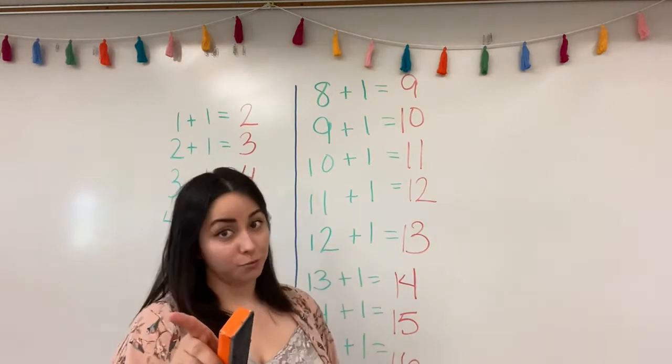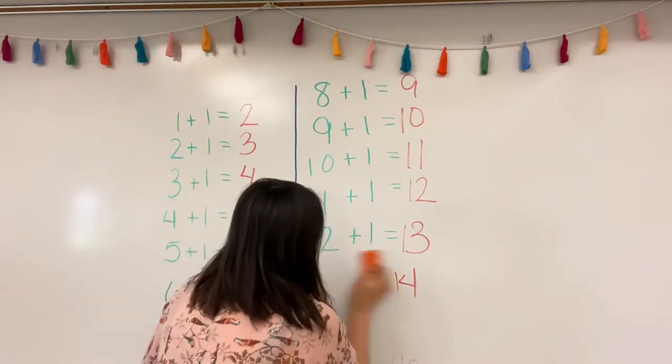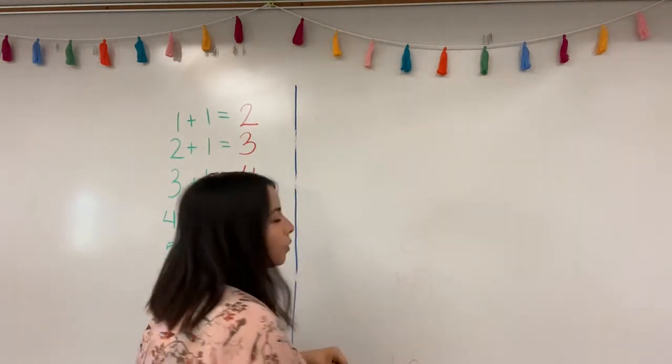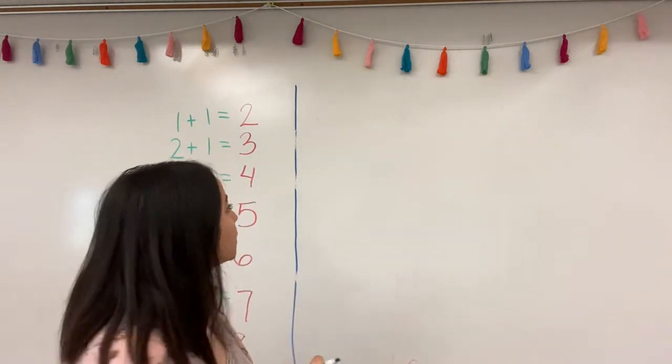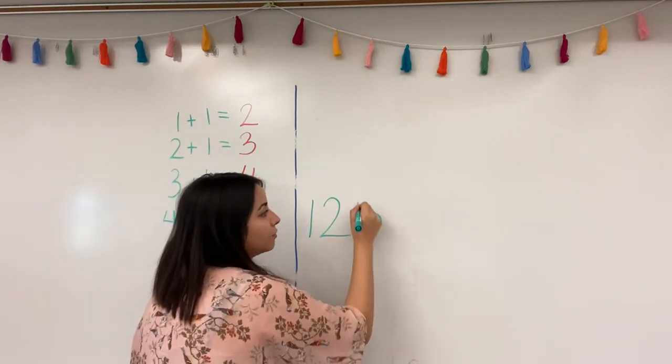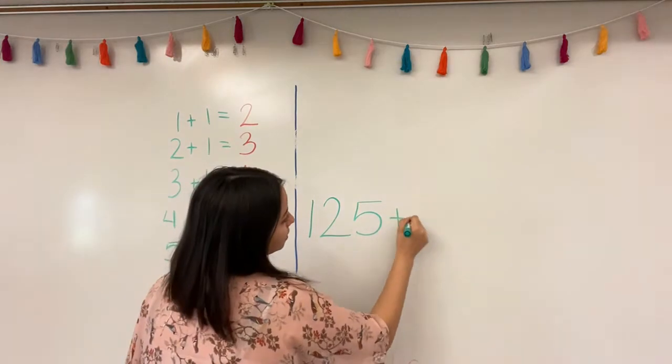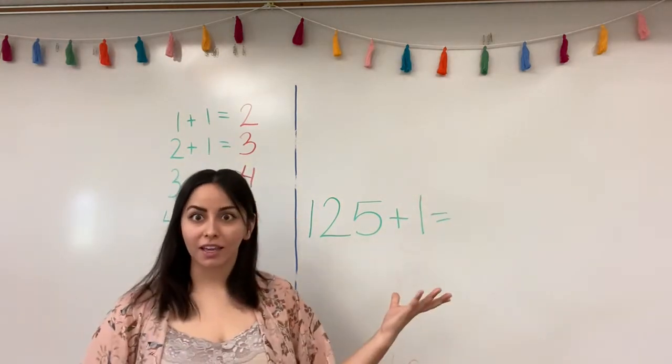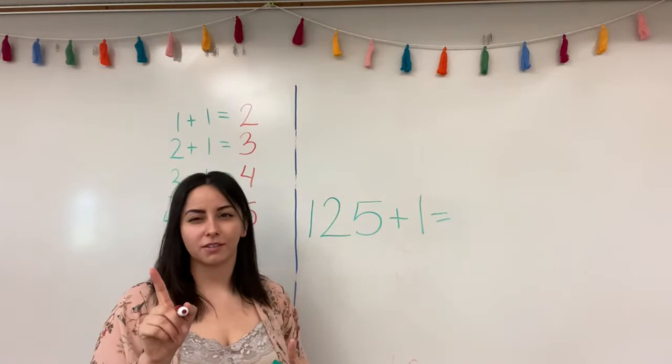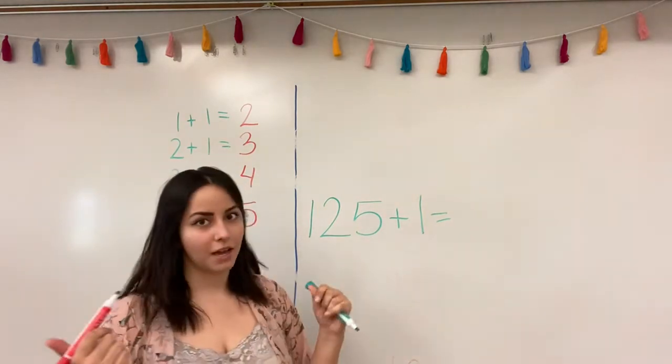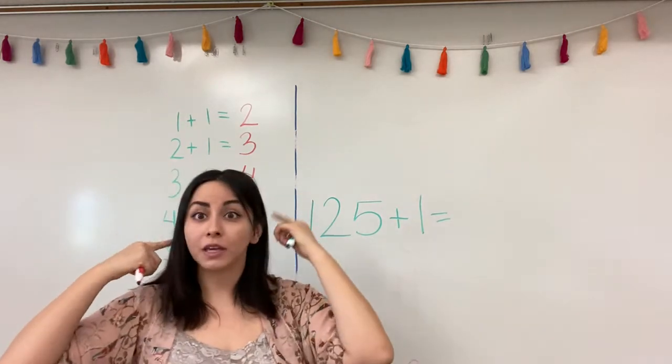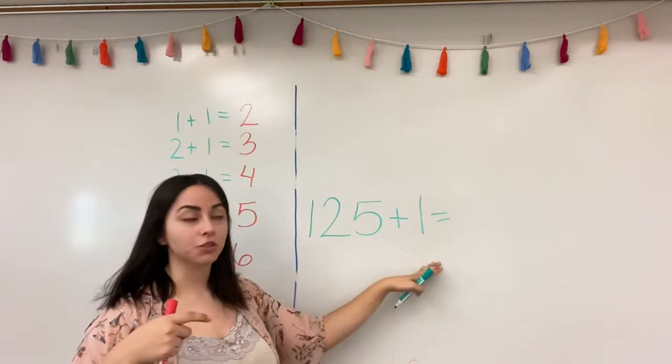Now, because I know this is super easy for a lot of you guys, I'm going to make it just a little bit more trickier. So hang on to your hats. What if I were to do a hundred and twenty-five plus one? What does that give us? A hundred and twenty-five plus one. Go ahead and tell me, what do you guys think it is? Now, do we have a hundred and twenty-five fingers? That would be very creepy. I hope you don't have a hundred and twenty-five fingers.